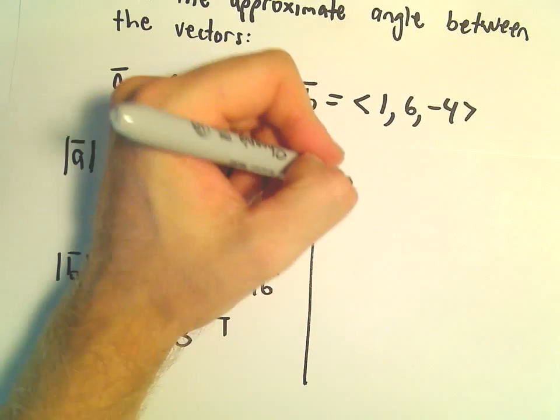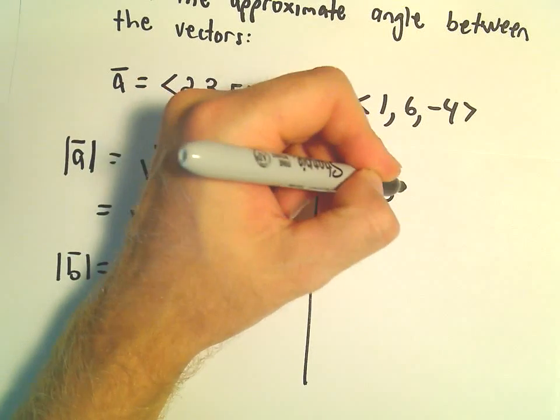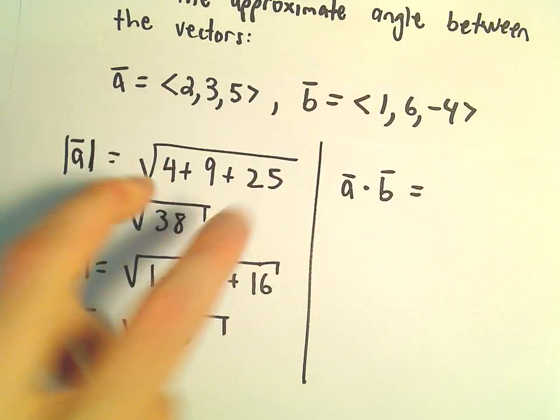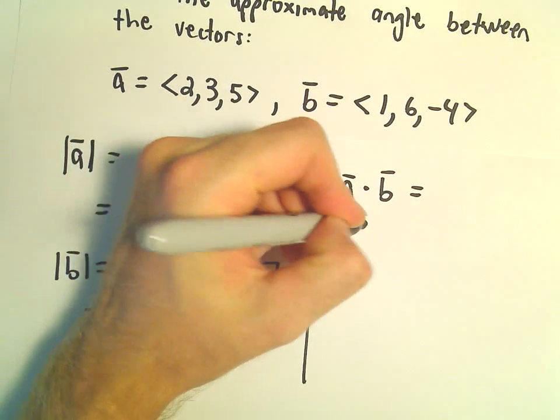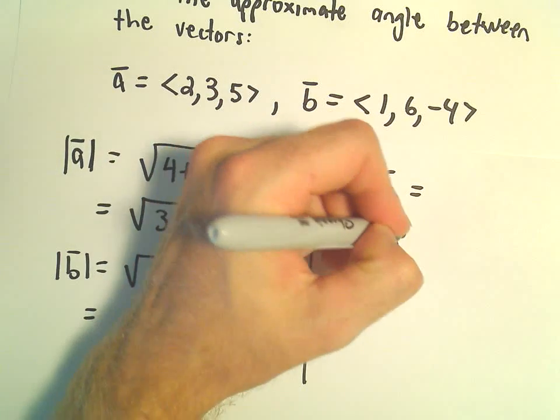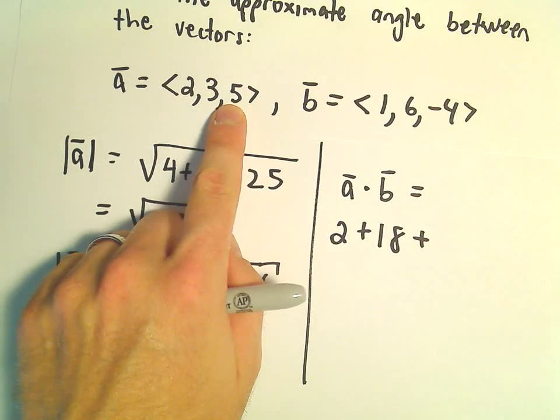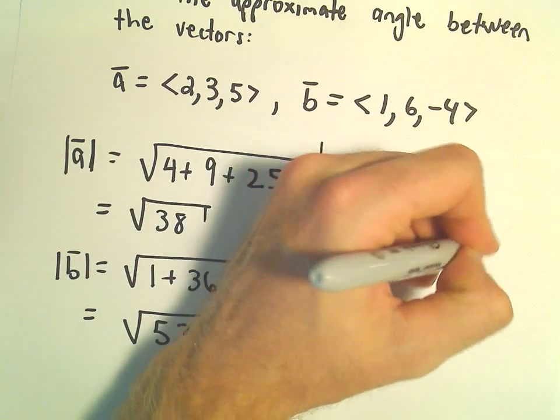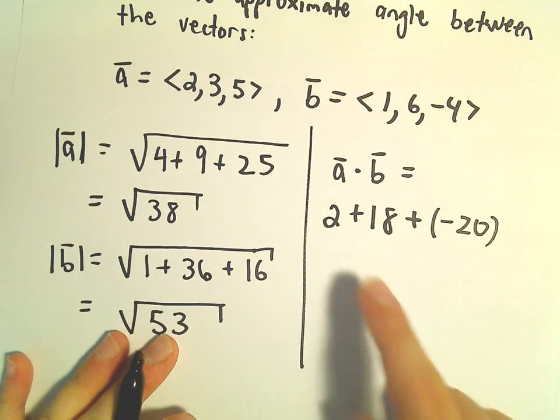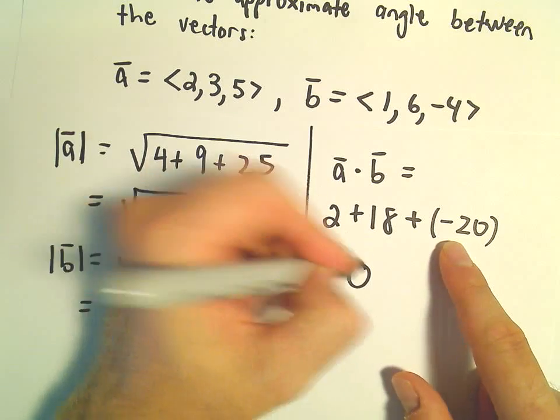Now we also have to compute the dot product of these two vectors. So there we'll multiply respective components. 2 times 1 is 2, 3 times 6 will be 18, we'll have 5 times negative 4, which is going to be negative 20. So that's going to give us 20 minus 20, or 0.